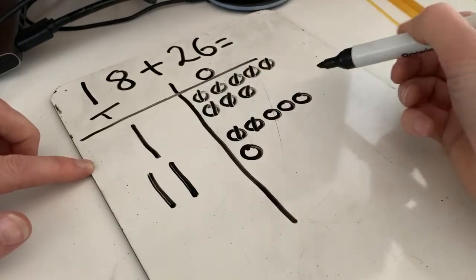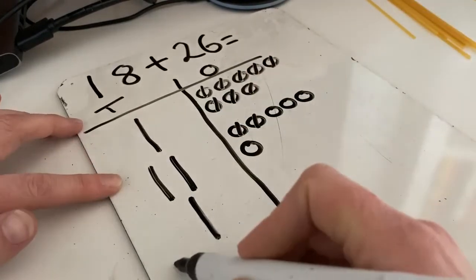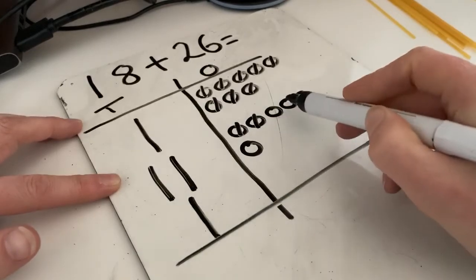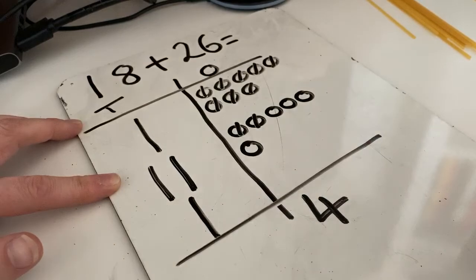And we need to exchange them by adding in another ten on that side. Now let's see how many ones we've got left now. One, two, three, four. Four ones.